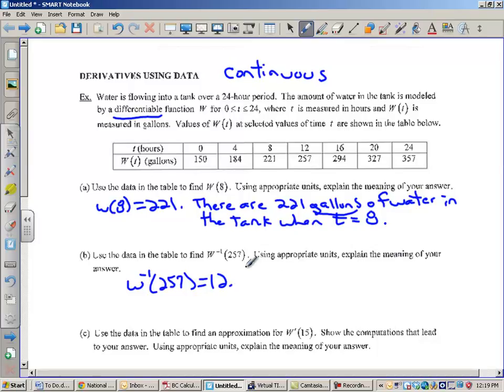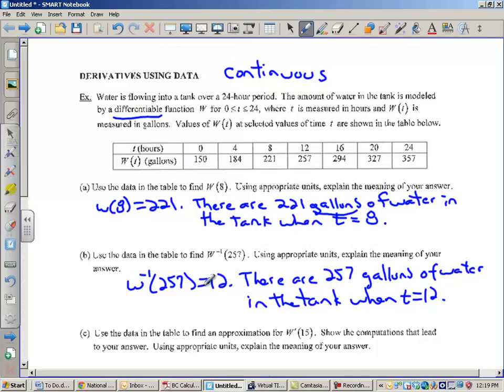We're going backwards from basically Y to X. Using appropriate units, explain the meaning of your answer. There are 257 gallons of water in the tank when T equals 12. So, this would be, you could also restate this as, at time T equals 12, that is when you had 257 gallons of water in the tank. So, you can read the table forwards and backwards.